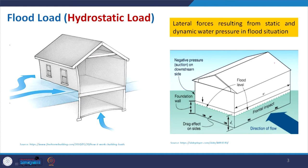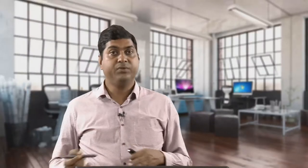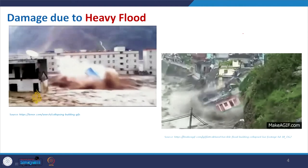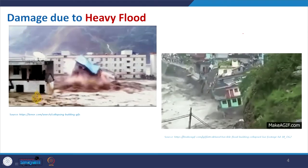Coming to flood problems and fundamentals — the flood load. Whenever there is a water-lock situation, water will try to pass with a direction and flow along a natural slope. On its way, if it meets an obstruction, that will create thrust. At the opposite side, it will have negative pressure or suction — like the wind. Lateral forces resulting from static and dynamic water pressure in a flood situation are very dangerous and may be really catastrophic.